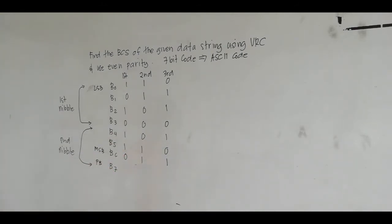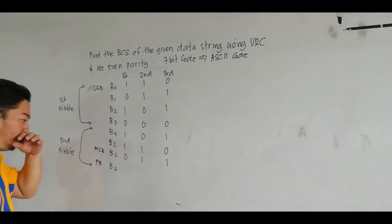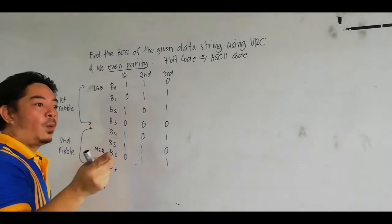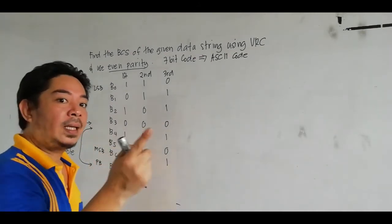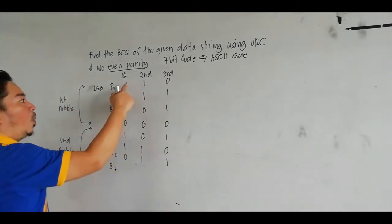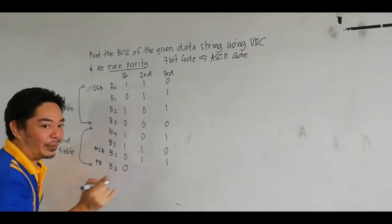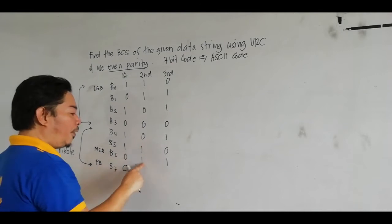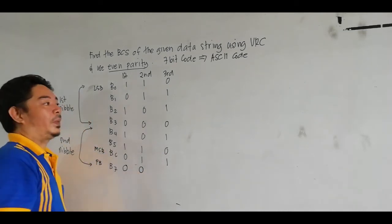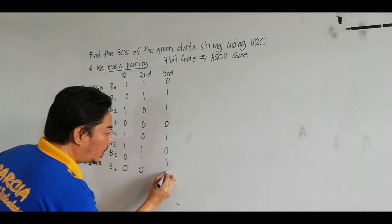What we are going to do is solve for the parity bit — that is bit number 7. For even parity, we count the number of 1s, and the number of 1s must be even. For the first data string, counting the 1s gives 4, which is even, so the parity bit is 0. For the third data string, counting gives 4 ones, so the parity bit is also 0.